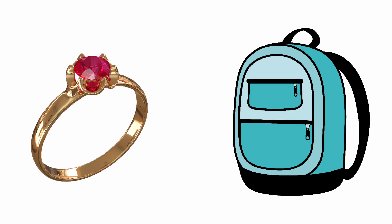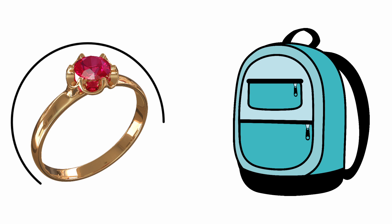Next one — Ring and Bag. The beginning sound of the picture Ring is R, and the sound of the letter R is R. The sound of the letter R and the beginning sound of the picture Ring are the same. So we are going to circle the picture Ring.